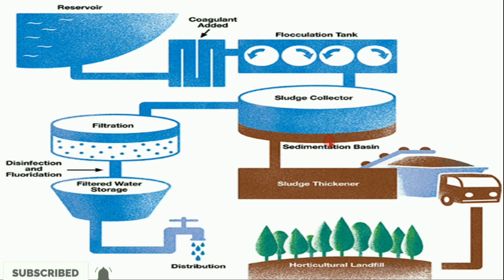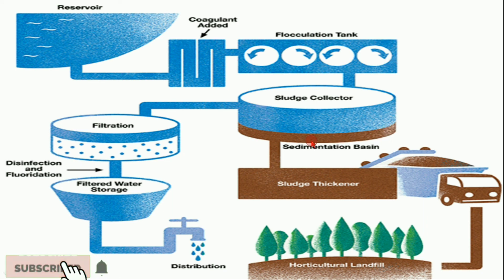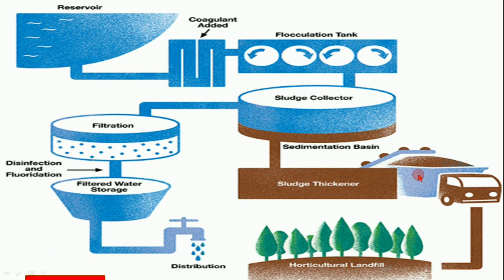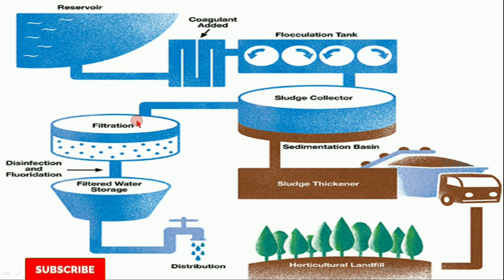All the heavier molecules settle down at the bottom of the layer in the sedimentation basin. Those settled materials are collected separately. The upper level of clarified water is separated and collected, while the lower-level sludge is used for other purposes, such as agricultural use.